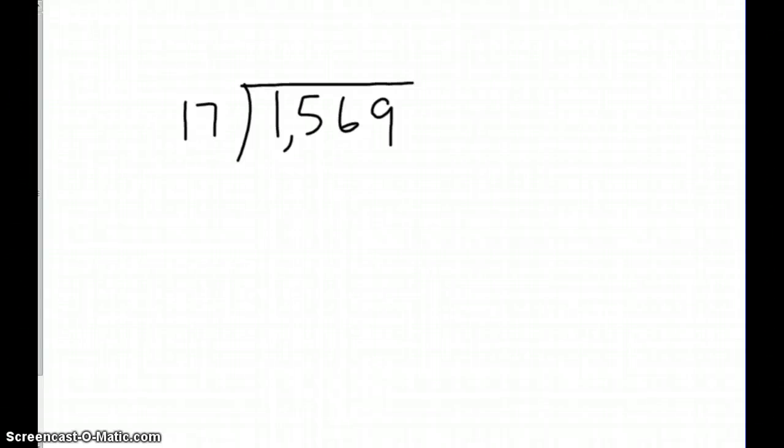Okay, so this tutorial is to help you on tonight's homework, and it is for estimating with two-digit divisors. I'm going to look at my problem. I have 1,569 divided by 17.